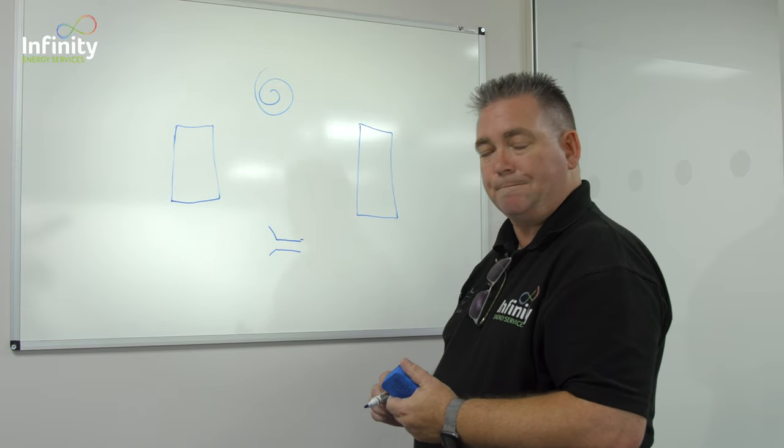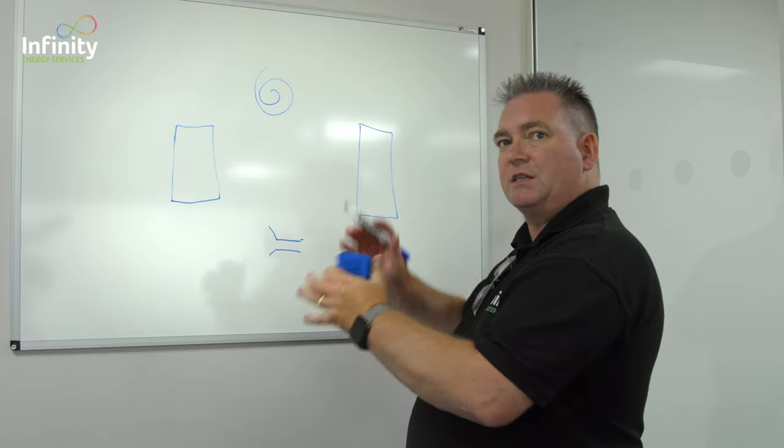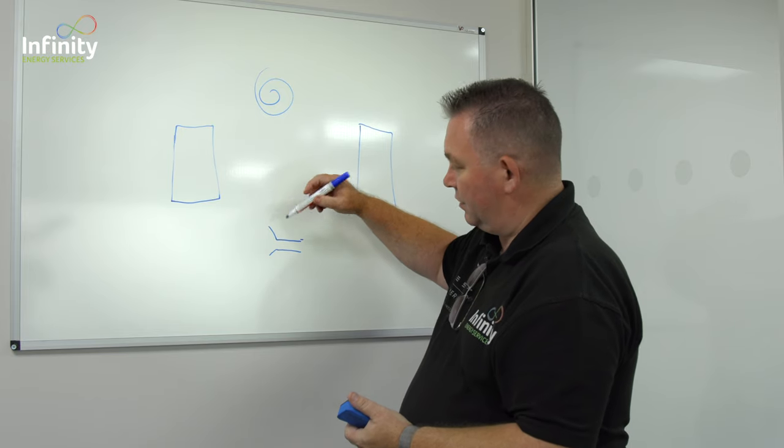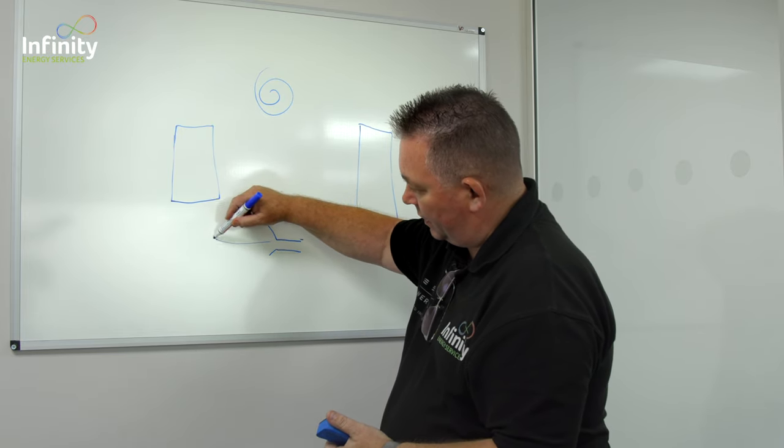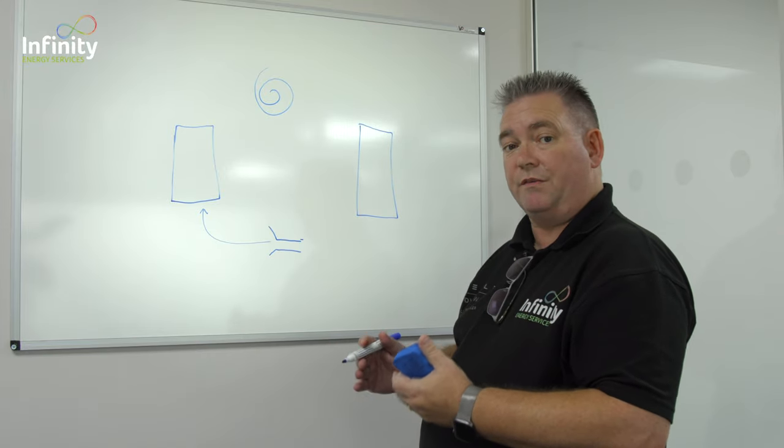Simple so far. So this is a sealed circuit, so nothing escapes, nothing can be added. So we'll start here with some refrigerant. So refrigerant comes this way and up. At this point it's just a very cold liquid.